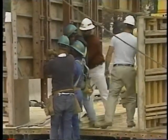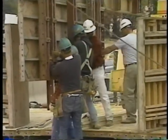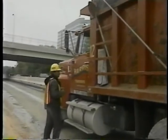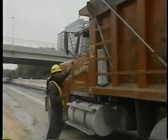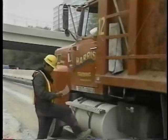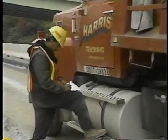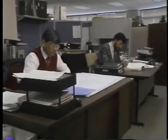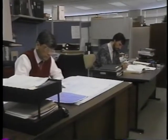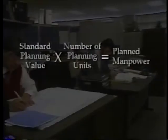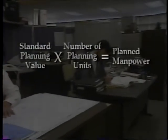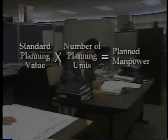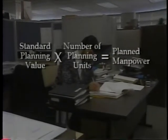Manpower is planned by activity or activity group for each contract or program. Planned manpower may be computed in terms of man-hours or man-months. Regardless of planning method, the basic computation is: standard planning value times number of planning units equals planned manpower.